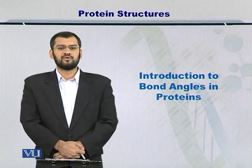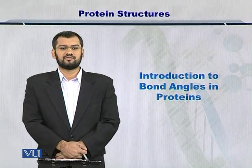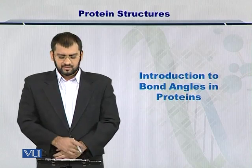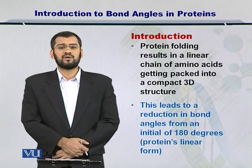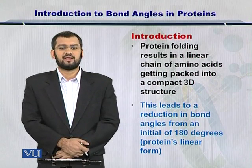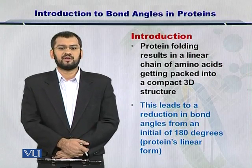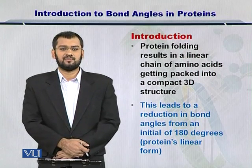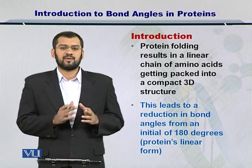Dear students, in this module we are going to talk about the protein bond angles that exist between the various atoms that constitute a protein. You know that the protein is comprised of 20 different amino acids and that they come together as a polymer to form a protein. Each amino acid has carbon, nitrogen, sulfur, oxygen, hydrogen and some other elements that are combined in order to form an amino acid.